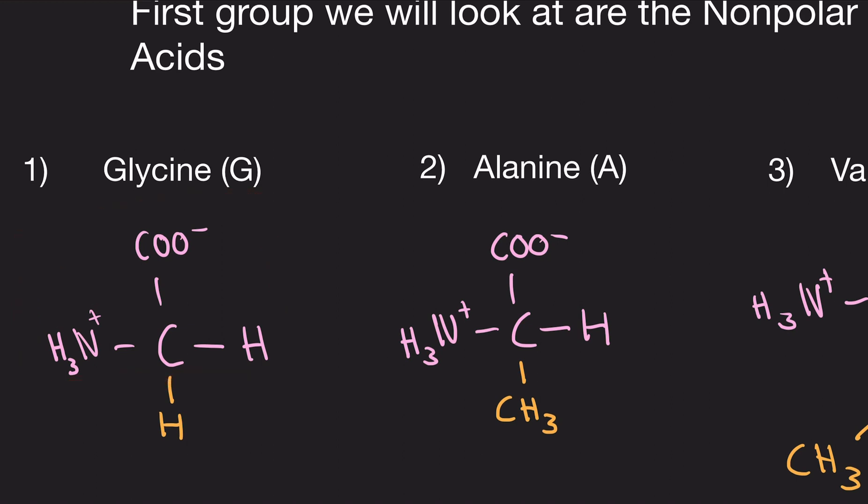So the pink is the normal amino acid structure we talked about in the last video. We have the alpha carbon, and bound to that is a hydrogen, with a carboxyl group, and an amino group. So the only thing that's different from all these amino acids is the R group, or the orange part. So glycine has just a lone hydrogen. That's it. That's glycine. Really easy. It's the simplest amino acid there is.